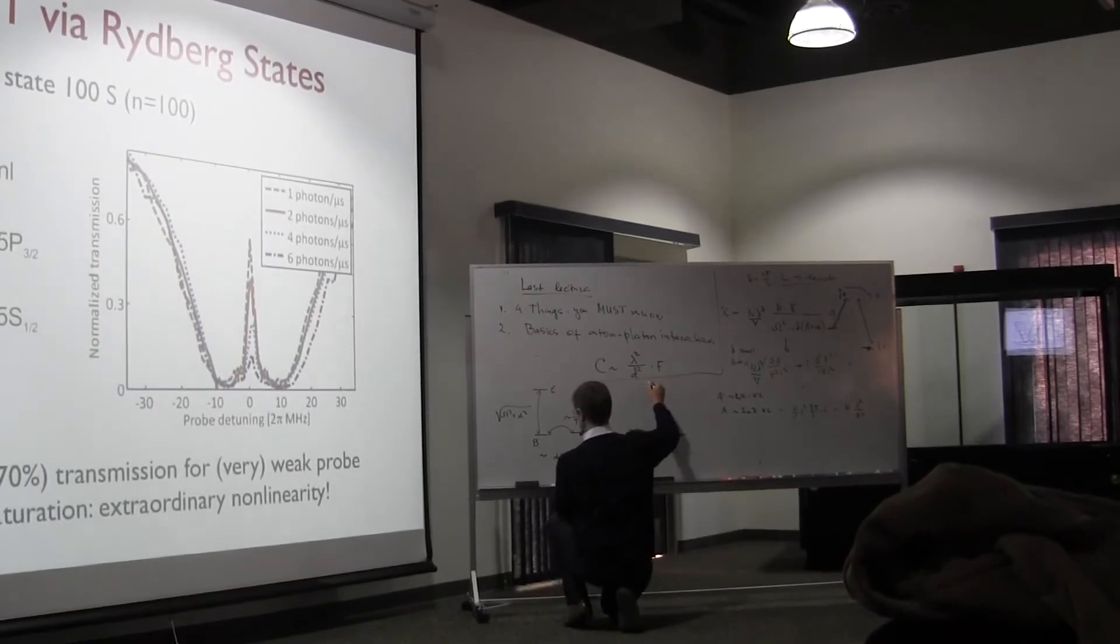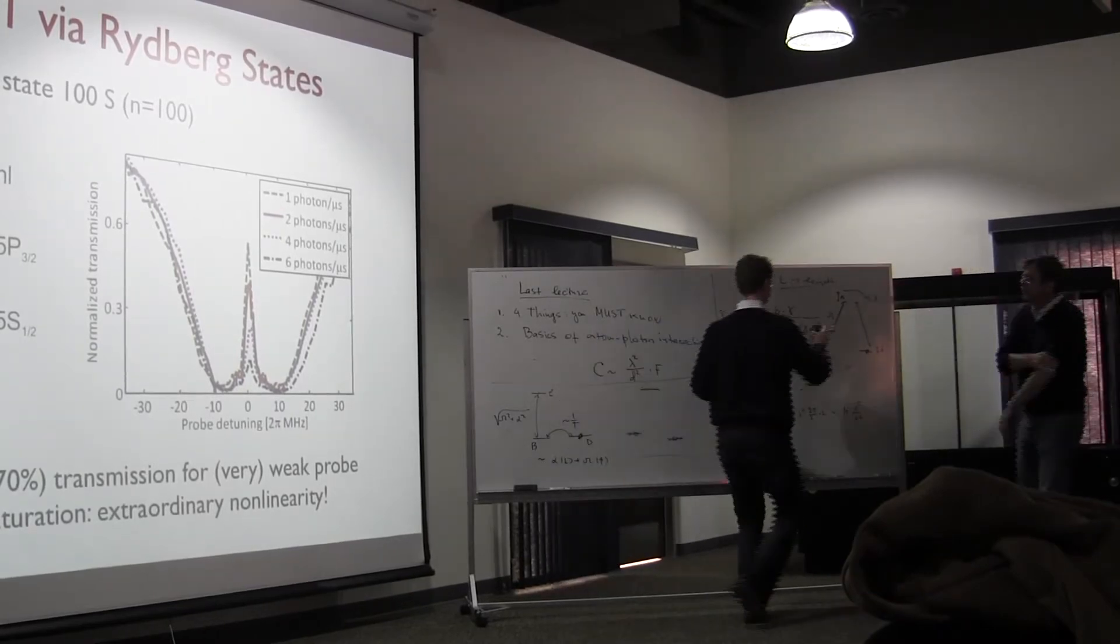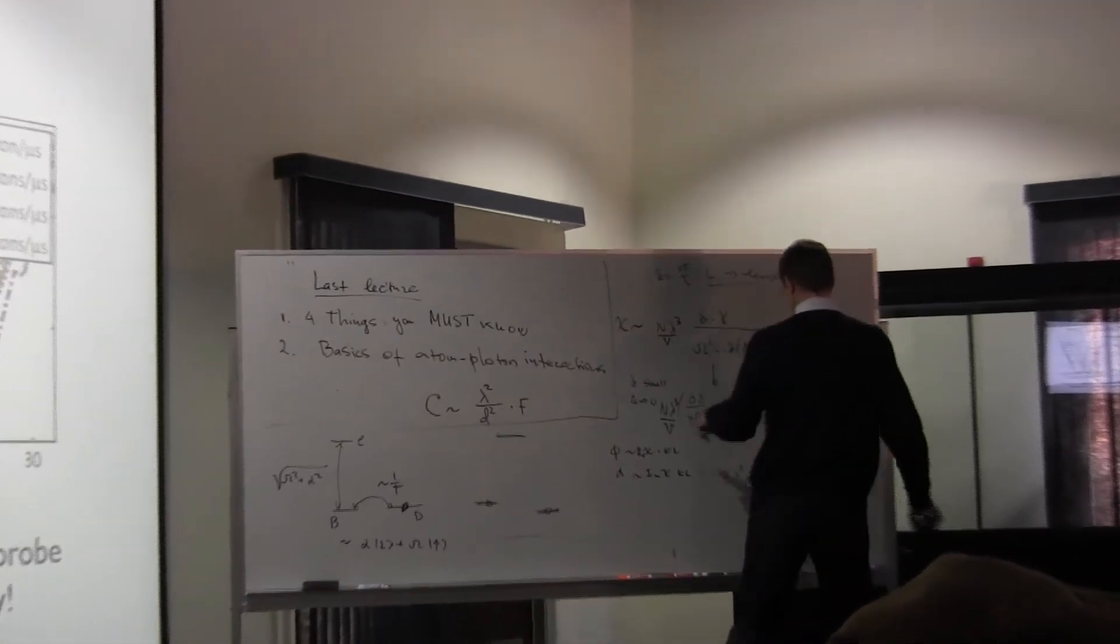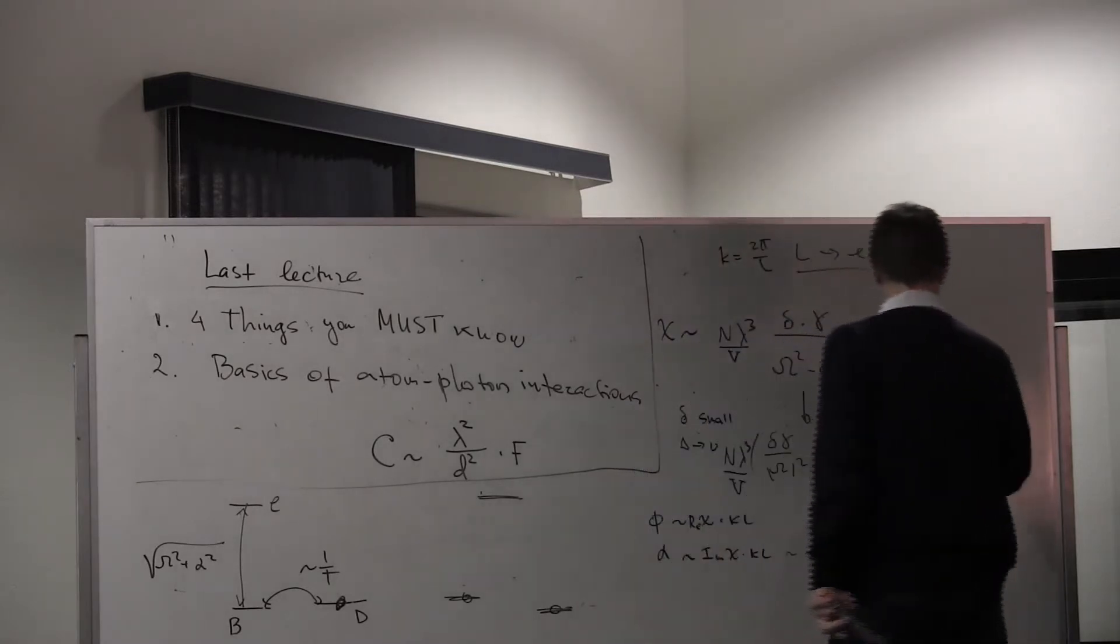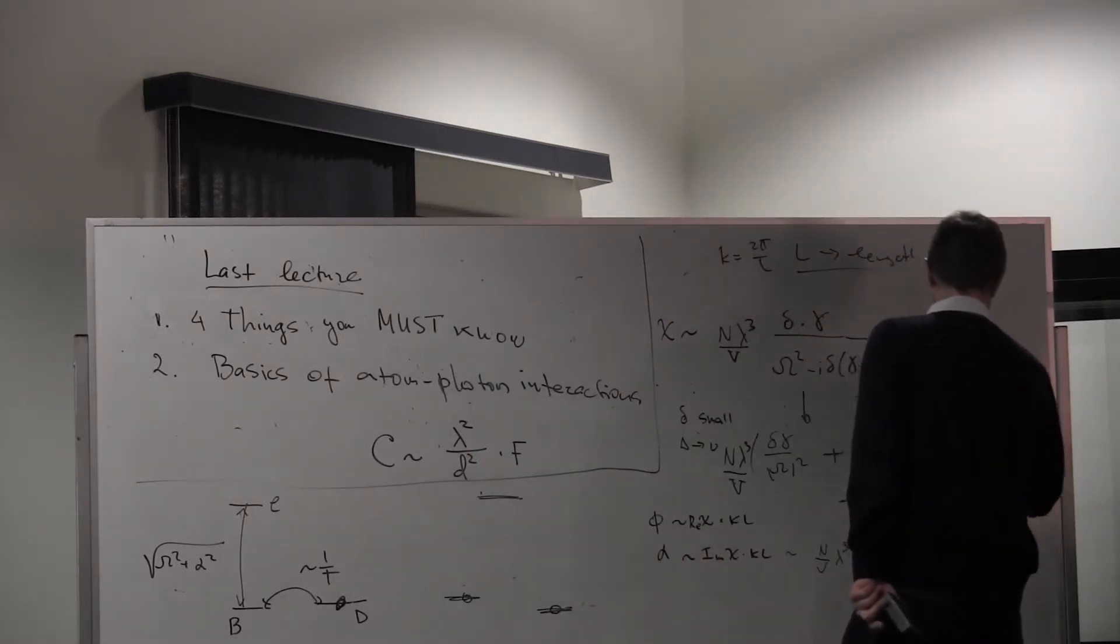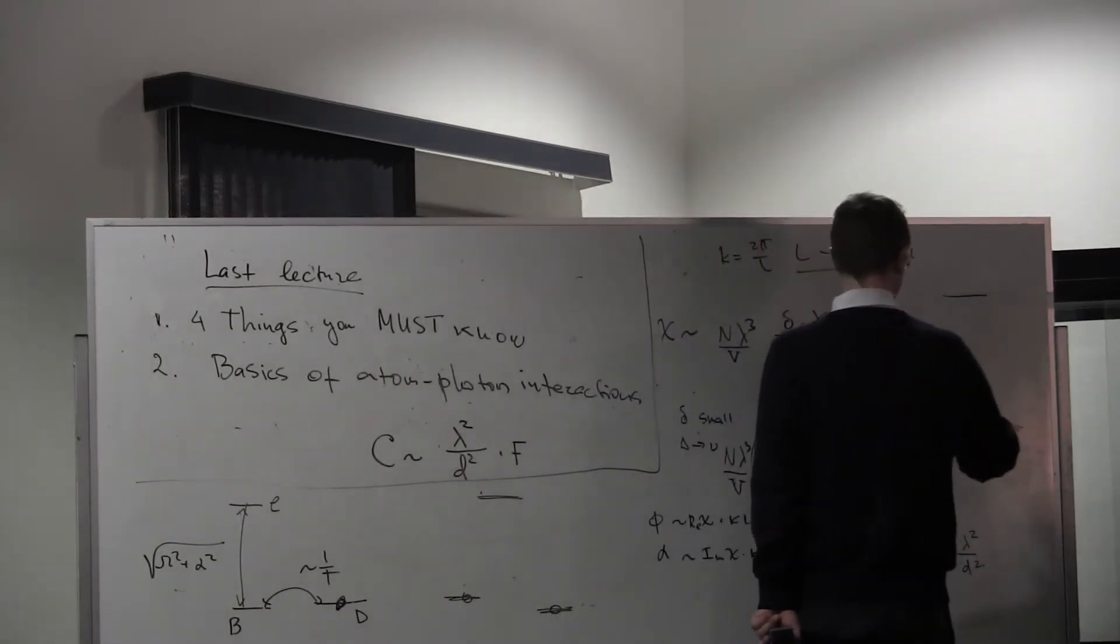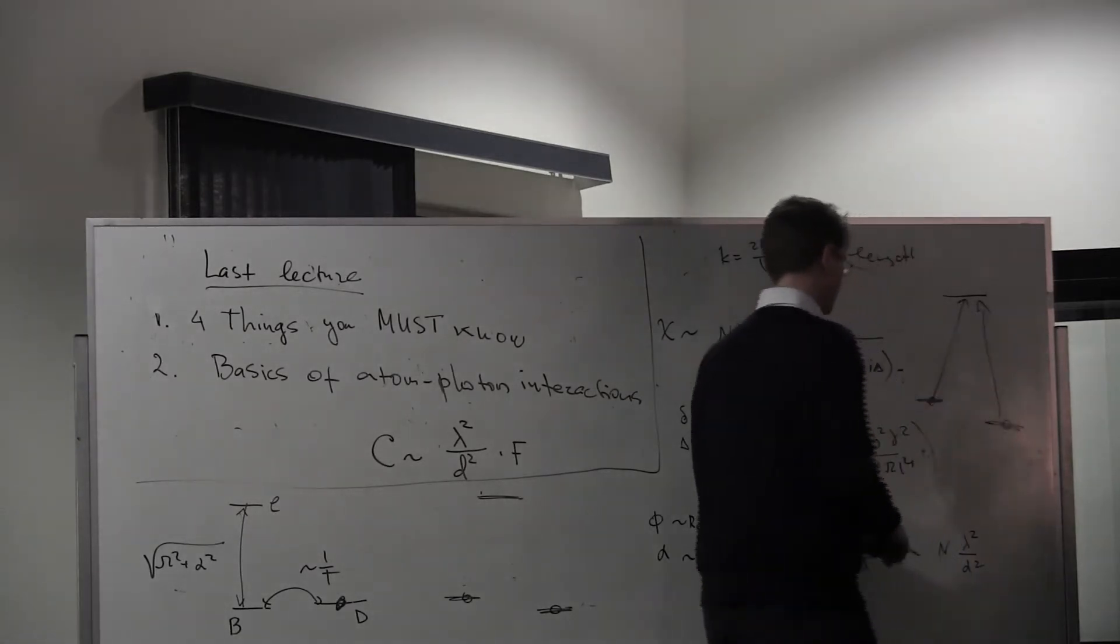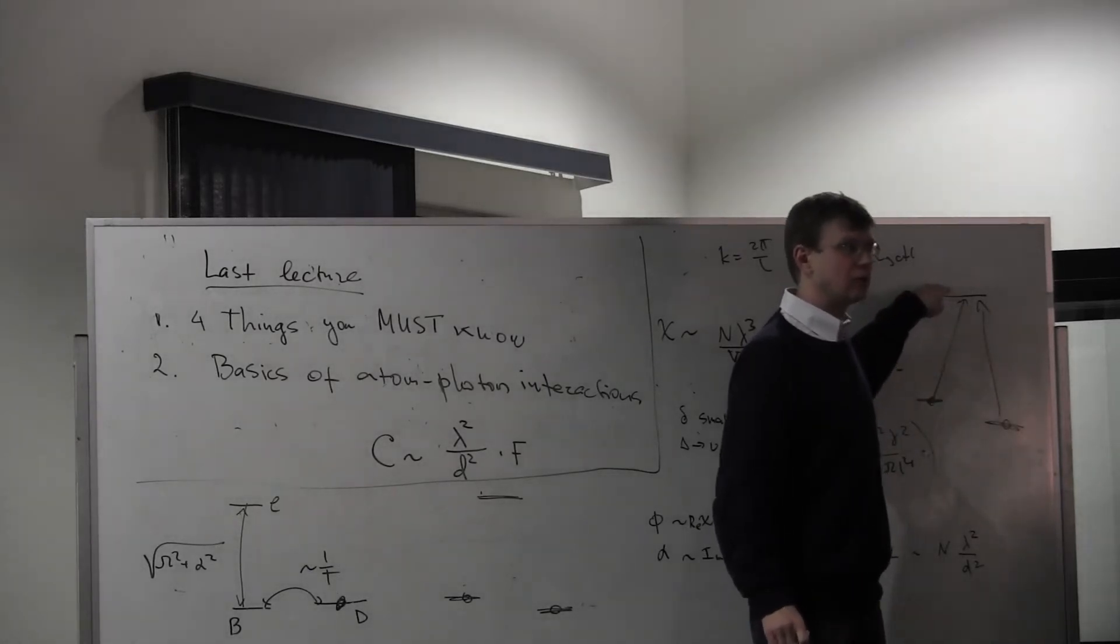And basically, do you still do that? No, no, no. This actually, this is useful because it contains the answer. So basically, suppose that you have, you prepare an atom in superposition of the two states, and then I apply two fields. Right? So now I have two absorption paths which terminate at the same state.